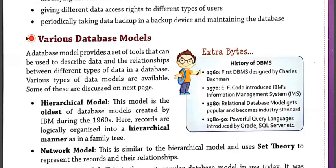Now let's discuss the very first database model, that is the hierarchical model. A hierarchical database model is a data model in which the data are organized into a tree-like structure. The hierarchical database model mandates that each child record has only one parent, whereas each parent record can have one or more child records. This model was introduced in 1960 and is considered to be the oldest database model.